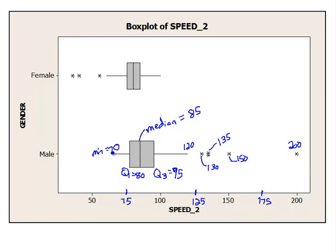So the five number summary would be 70, 80, 85, 95, and the maximum is 200. Let's look at the females.